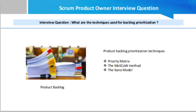Friends, there are mainly three techniques used for product backlog prioritization: the Priority Matrix, the MoSCoW method, and the Kano model. So one by one we shall discuss each in detail.